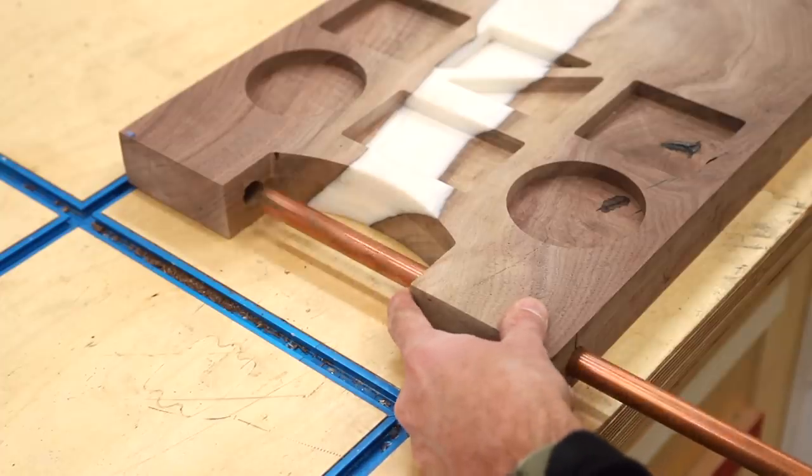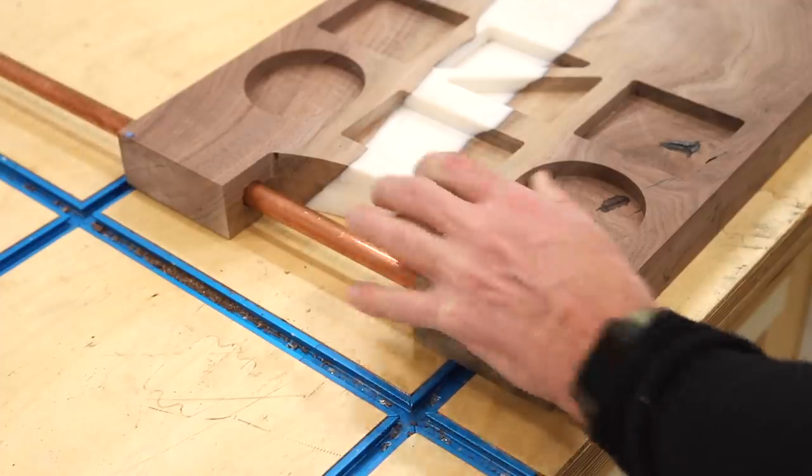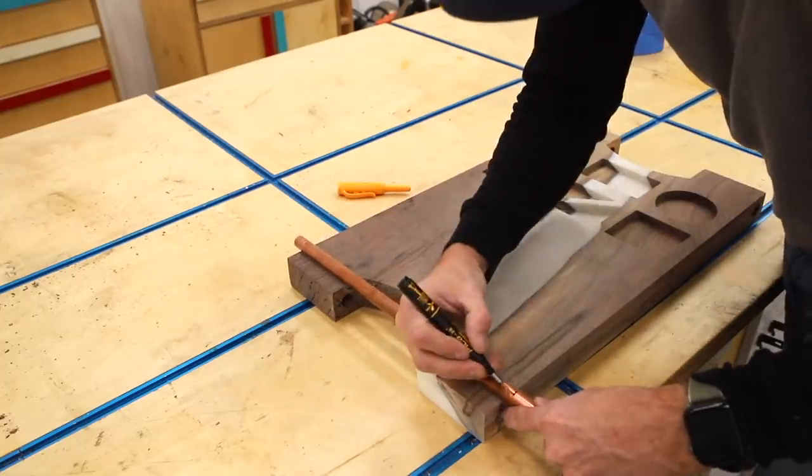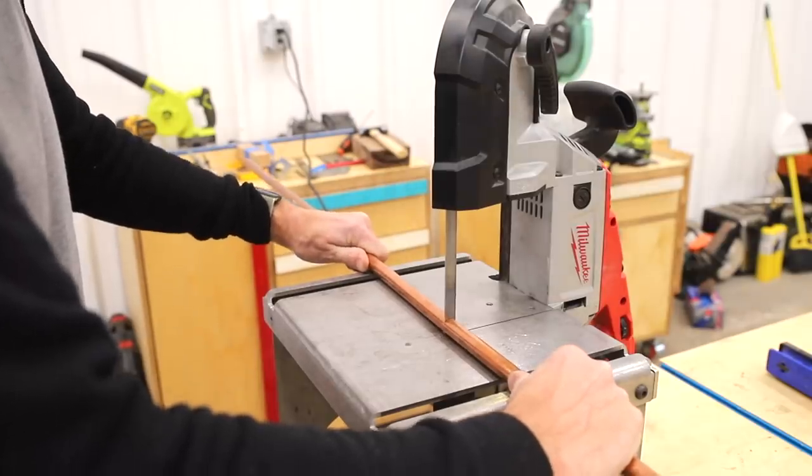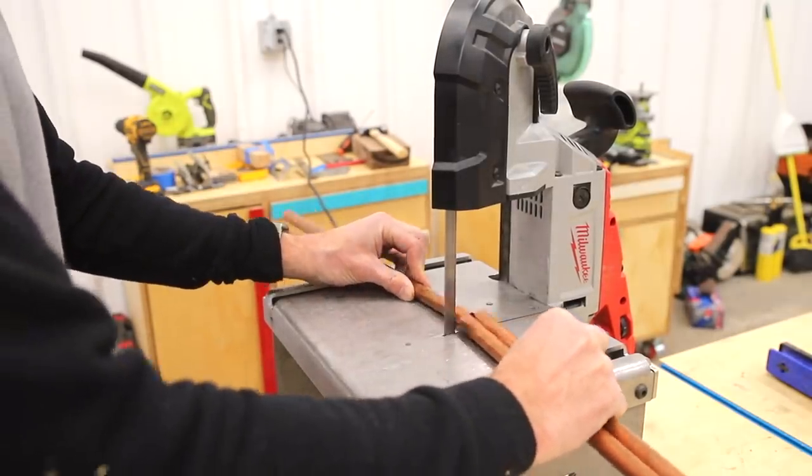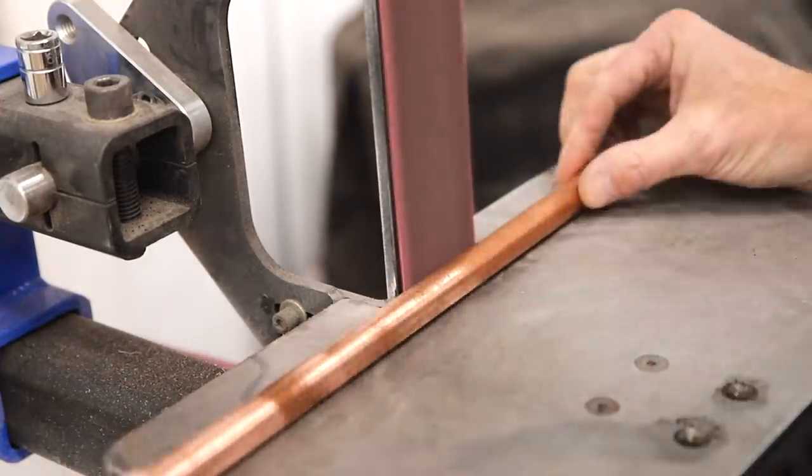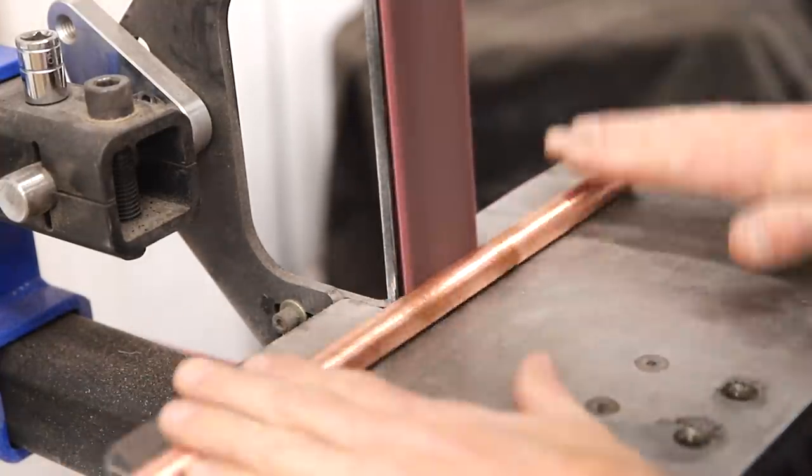So I got this length of five-eighths inch copper pipe from Joe when I was out at his shop and I thought it was perfect for the handles on this piece. I wanted to leave the ends exposed and then fill the copper pipe with some epoxy. I measured the amount of pipe I needed for the handles and cut this over on my porta band. Again, using the belt grinder I threw on a finishing belt to clean up the outside of the copper pipes.